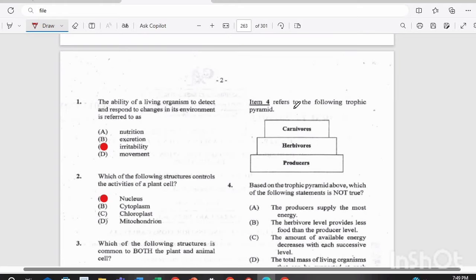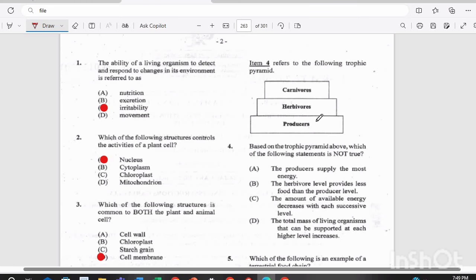Item four refers to the following trophic pyramid. We have carnivores, herbivores, and producers. Based on the trophic pyramid above, which of the following statements is not true? A. The producers supply the most energy. B. The herbivore level provides less food than the producer level. C. The amount of available energy decreases with each successive level. Or D. The total mass of living organisms that can be supported at each higher level increases. What is not true? The answer there is D.